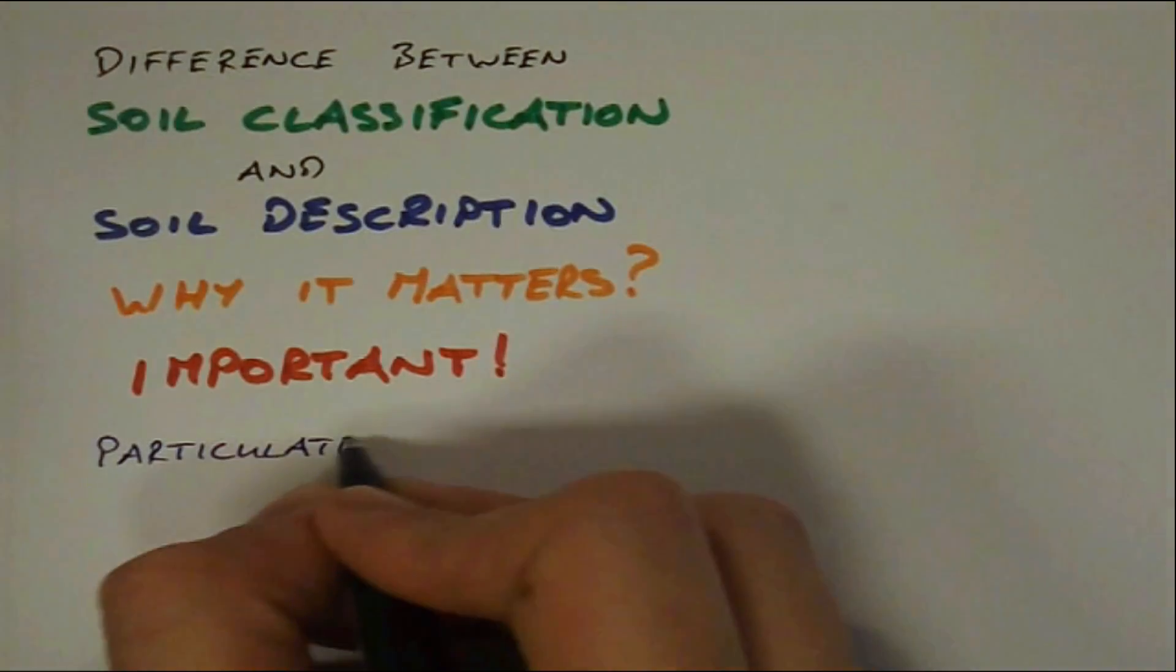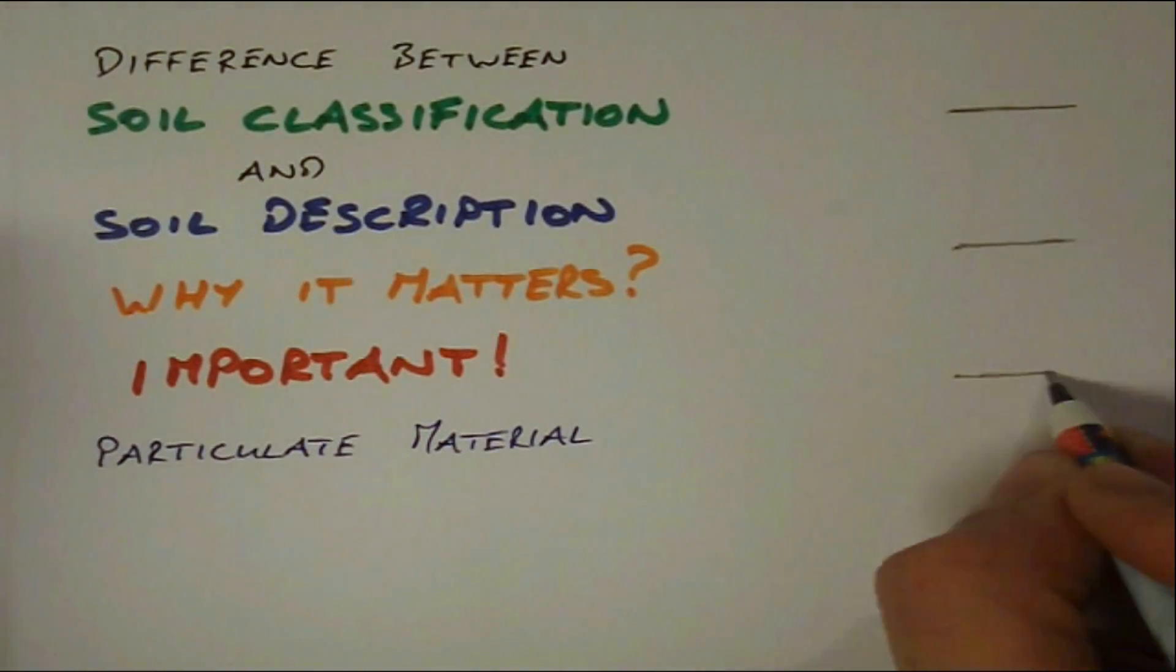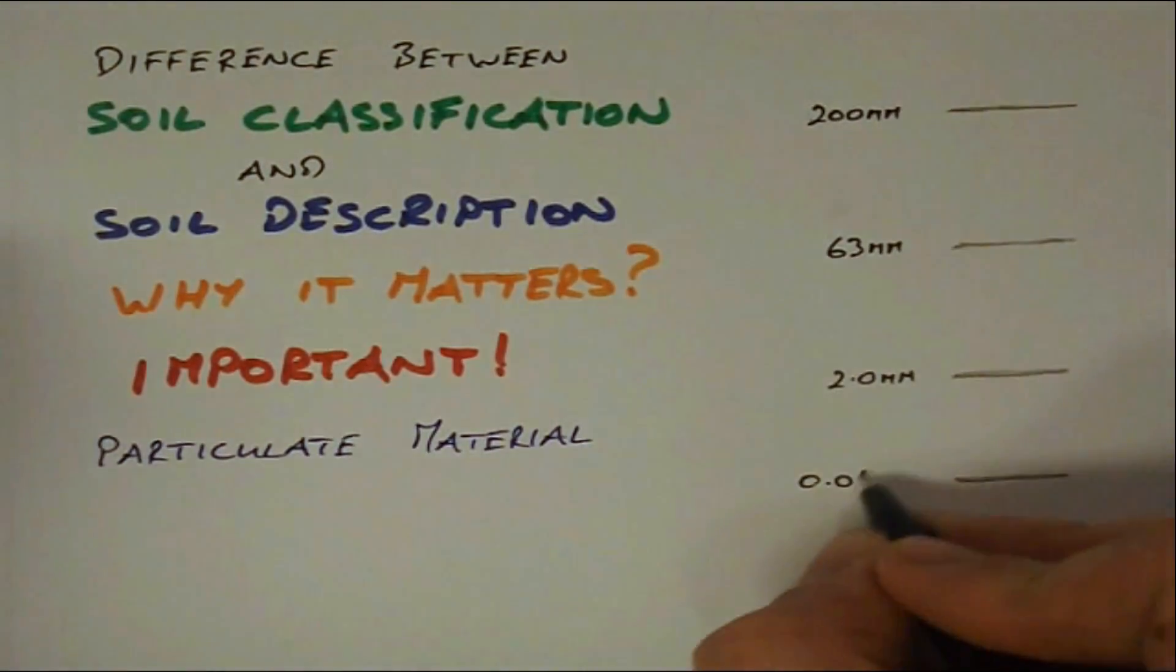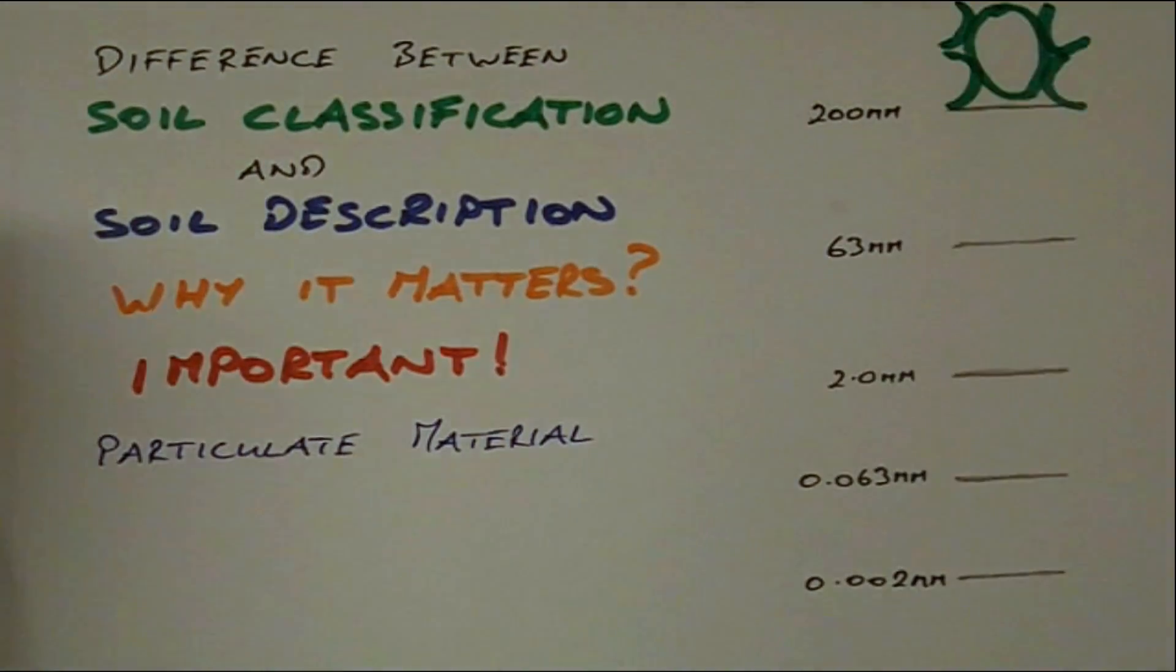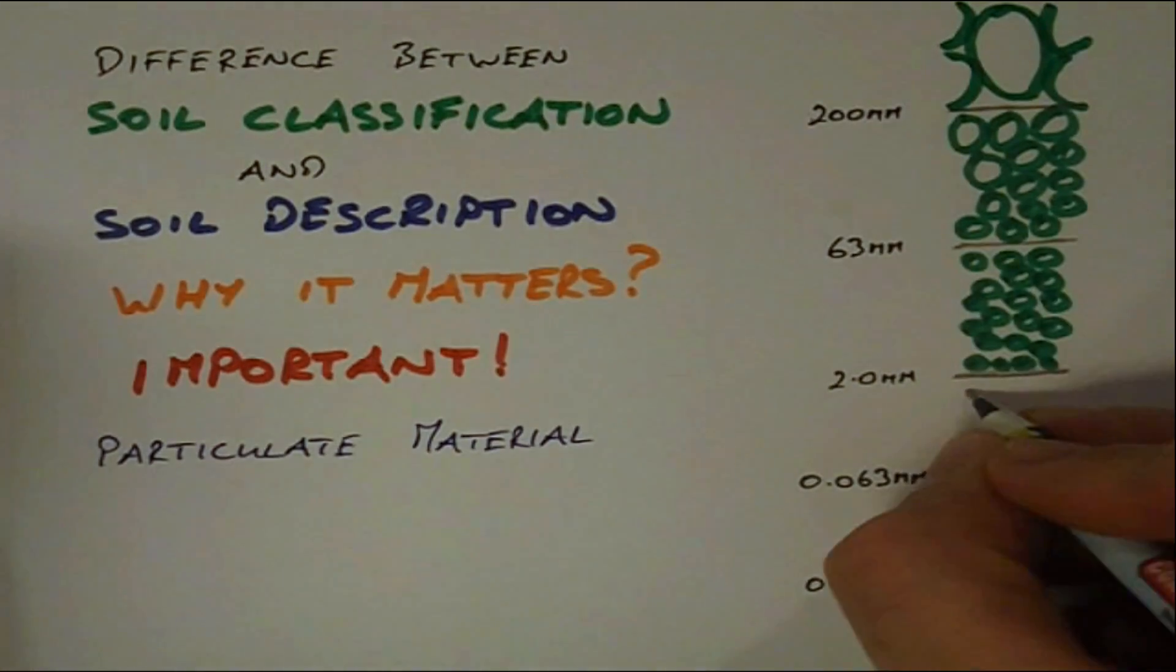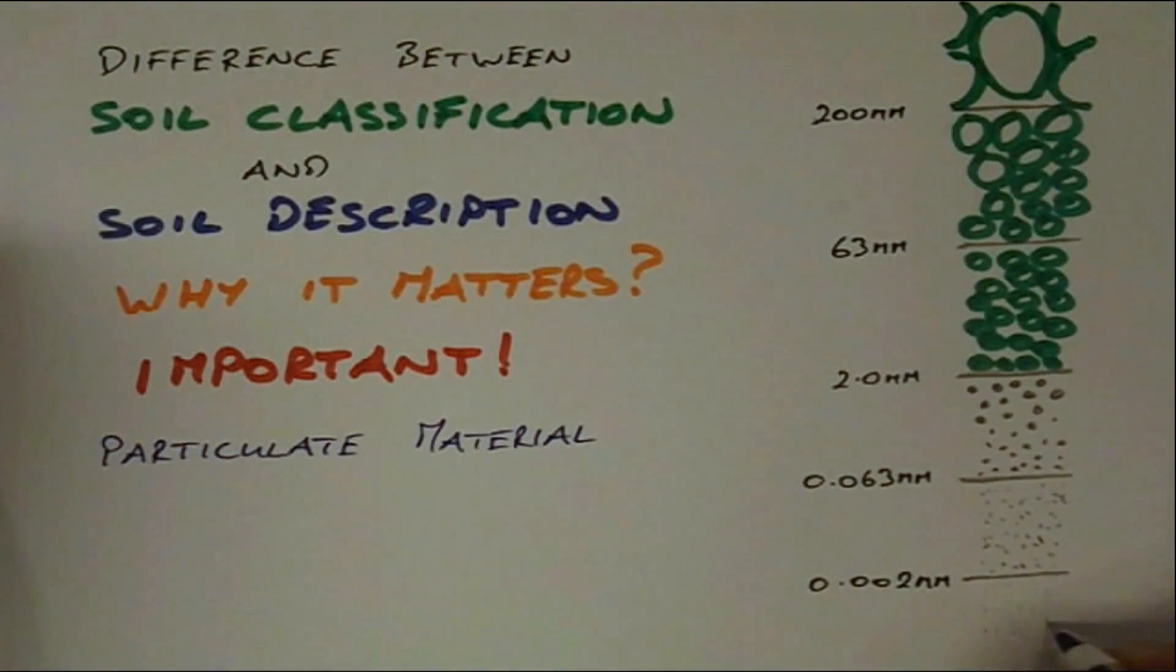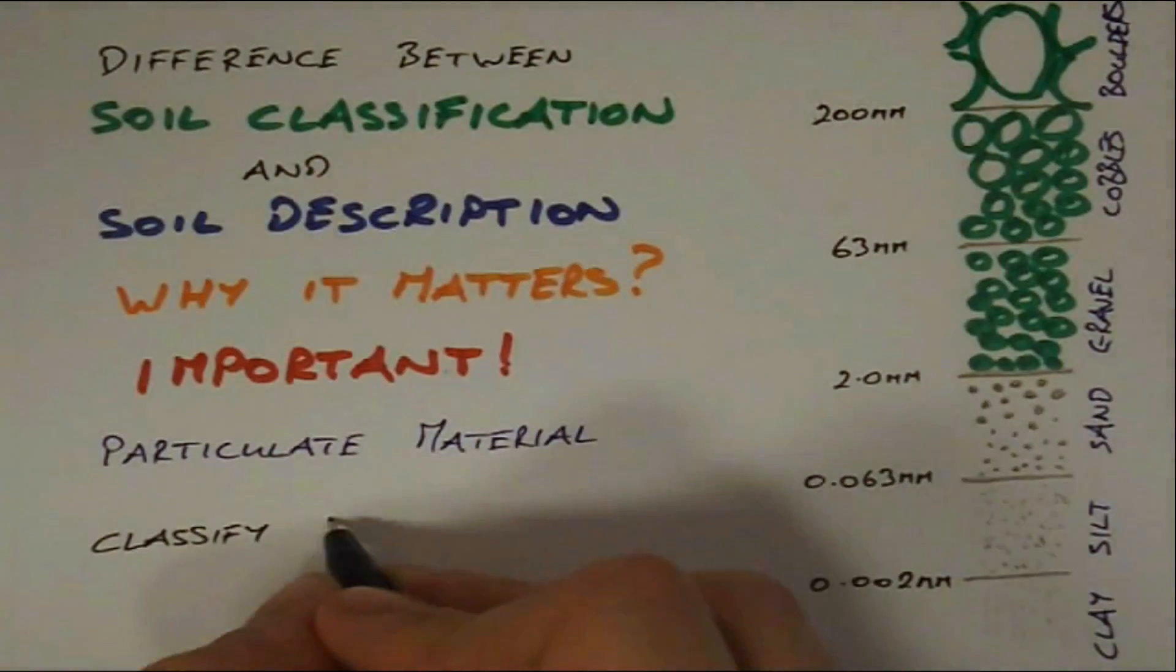We already know soil is a particulate material and most soils contain a range of particle sizes. The dominant particle size often dictates the engineering behavior of the soil and therefore it is essential that we can classify a soil so we get an indication of its likely behavior.